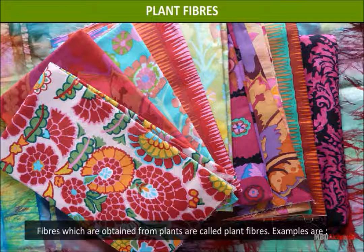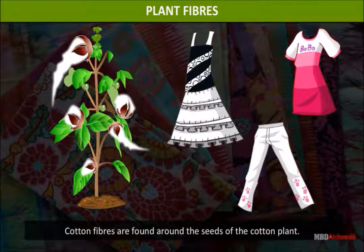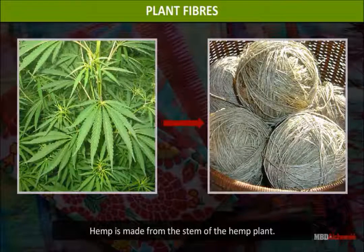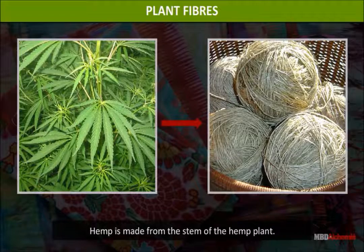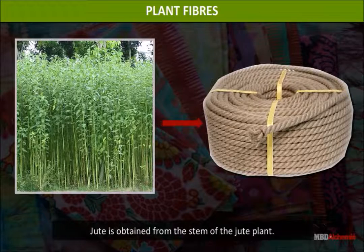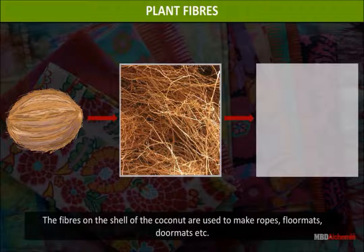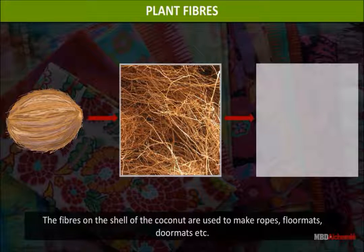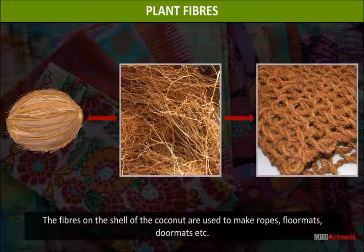Natural plant fibers: Fibers which are obtained from plants are called plant fibers. Examples are: cotton fibers, which are found around the seeds of the cotton plant; hemp, which is made from the stem of the hemp plant; jute, which is obtained from the stem of the jute plant; and coconut fibers from the shell of the coconut, used to make ropes, floor mats, and door mats.